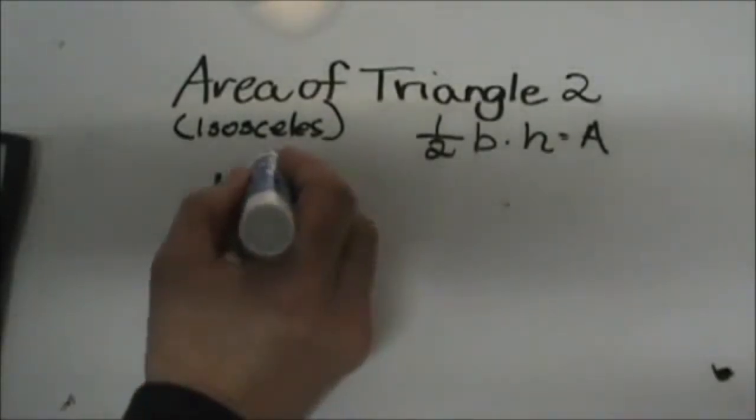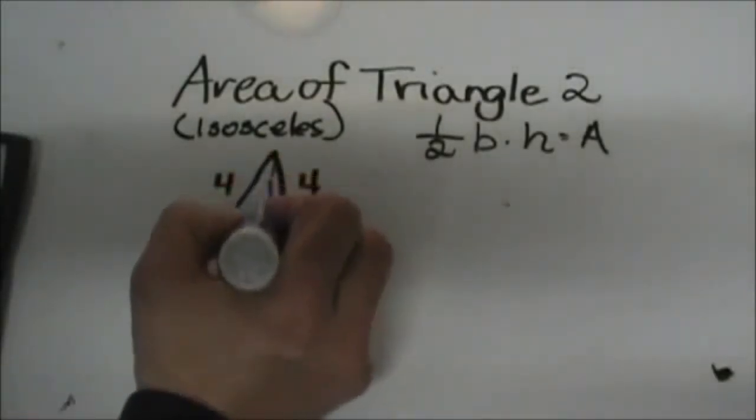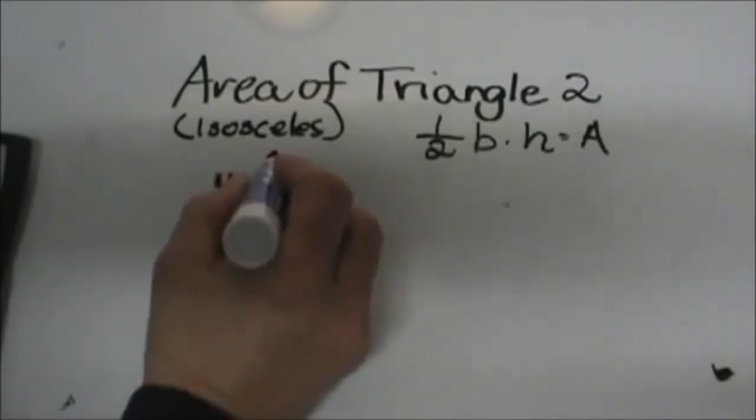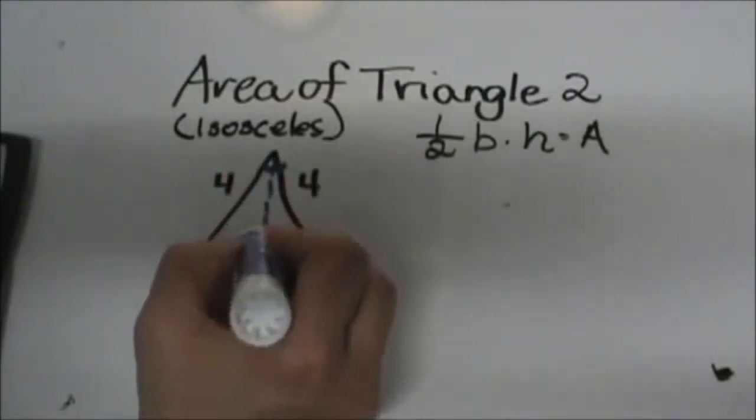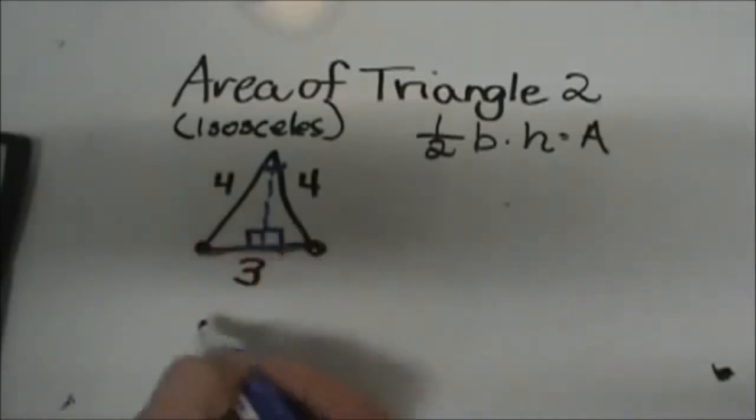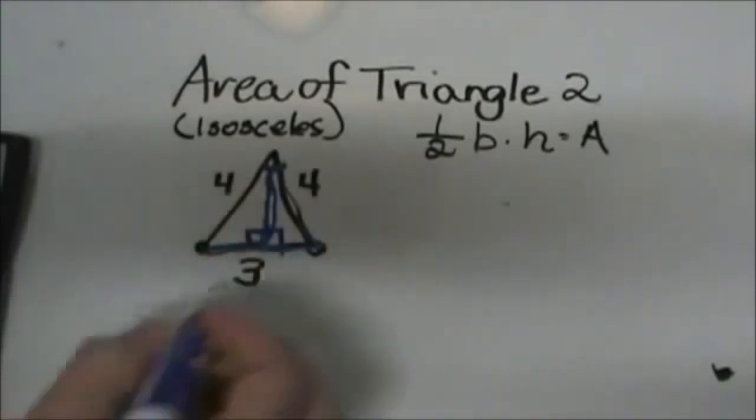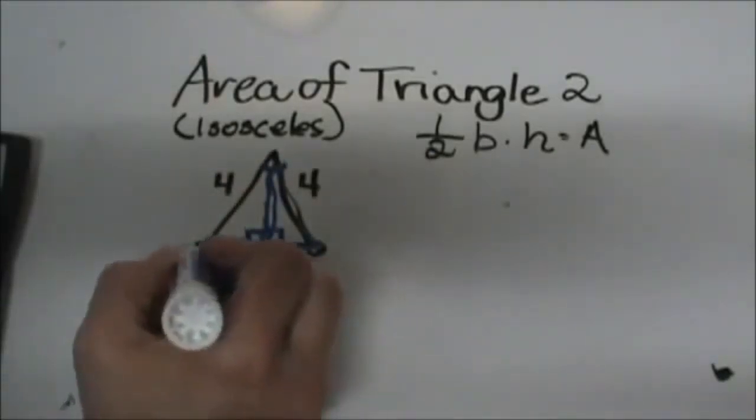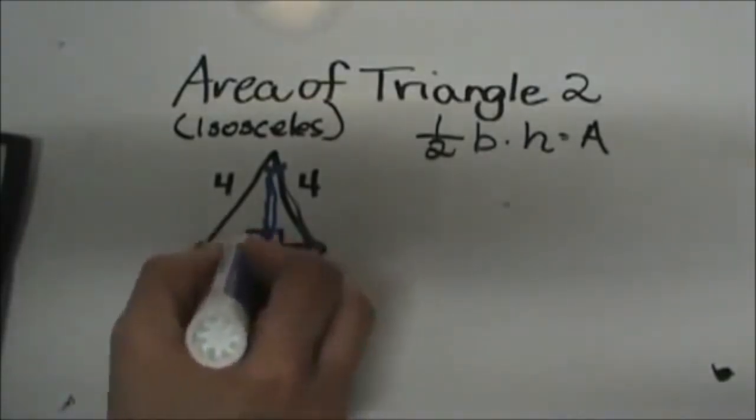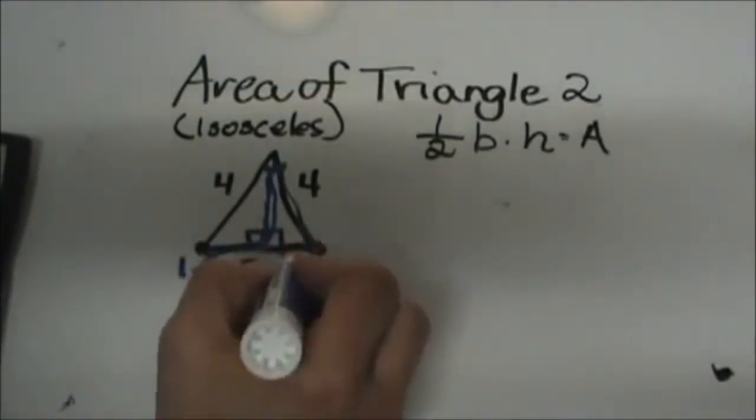To find the height I'm going to draw an altitude straight down out of what we call the vertex angle up here and it creates a right triangle. Since this is an isosceles triangle we know that these two triangles on the left and on the right are the same. We've taken this base of 3 and split it into two halves, so this section is 1.5 and this section is 1.5.